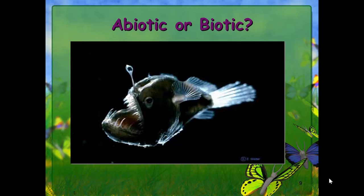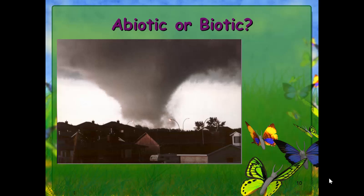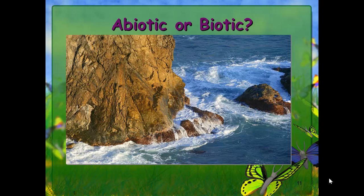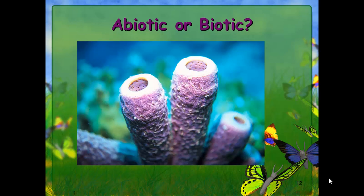Now a question: is this abiotic or biotic? Remember, abiotic stands for non-living and biotic stands for living. Is this living or non-living? The fish shown is biotic. This tornado — it is abiotic. This rock or the water, either one, they are abiotic. This next example may not look like it's living, but it is living — it's biotic.